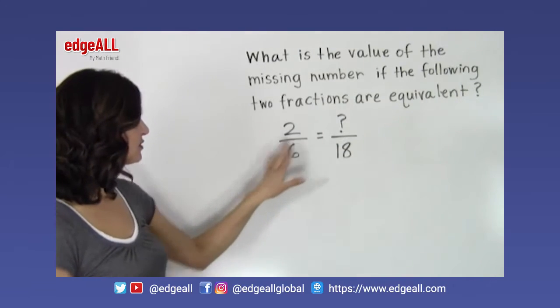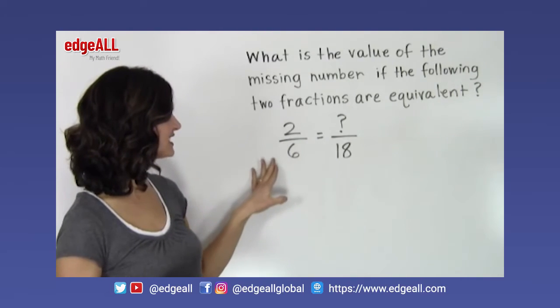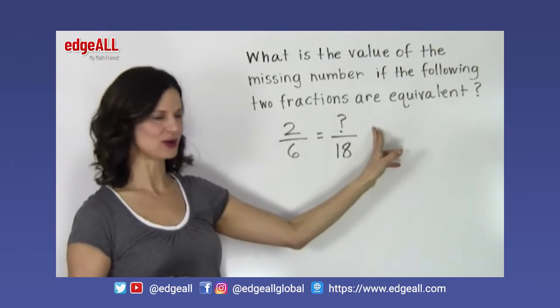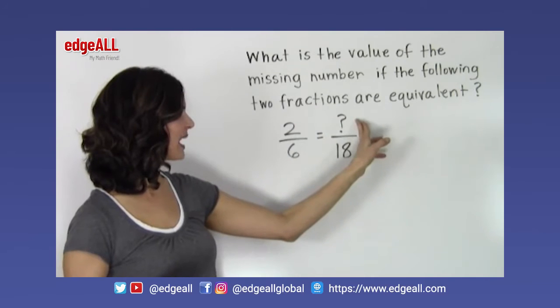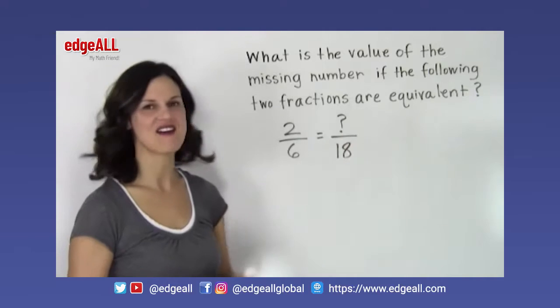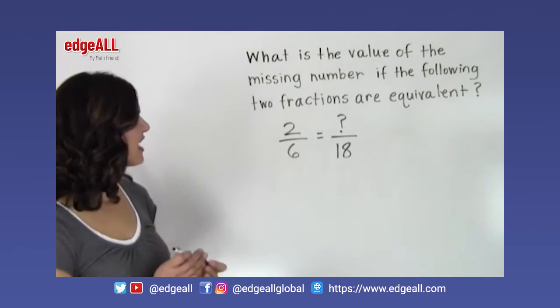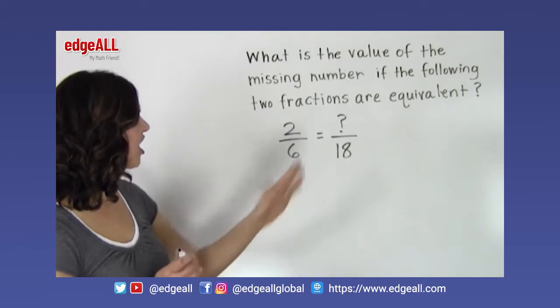So I've got two fractions here written next to each other, 2 over 6 and some number over 18. We've got a missing number here. We don't know what the numerator is of this second fraction. But we do know that these two fractions are equivalent.